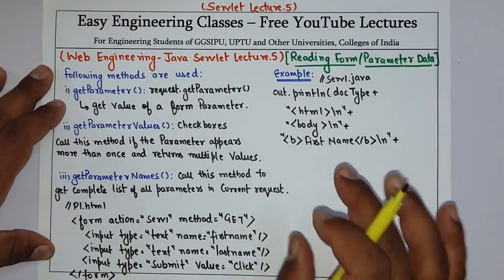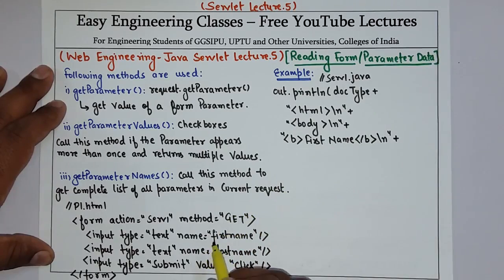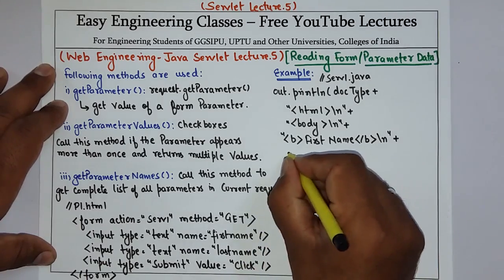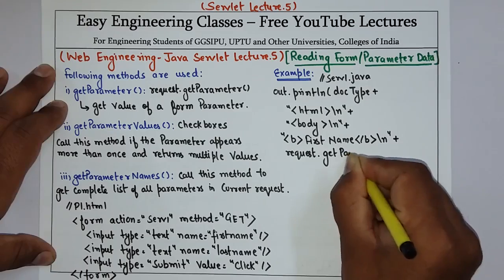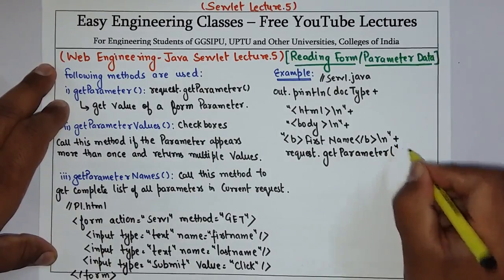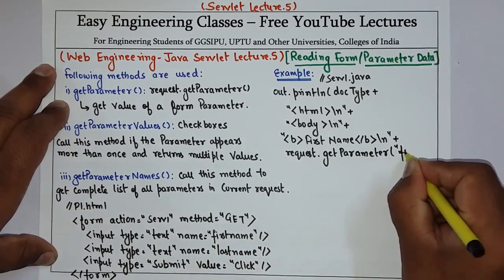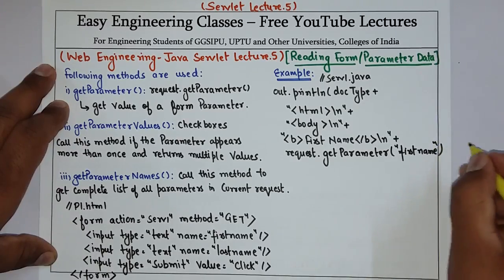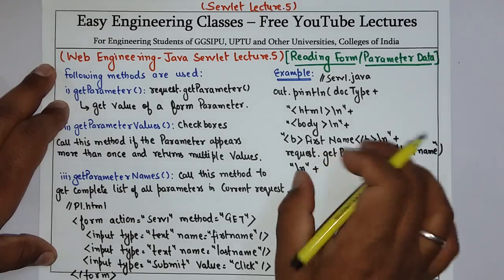We have to display the first name value that a user will enter in the text field and submit. So you use request.getParameter and pass the name of the text field — since the name is 'firstname', you pass 'firstname' here. Close it and then append it for the further HTML part.